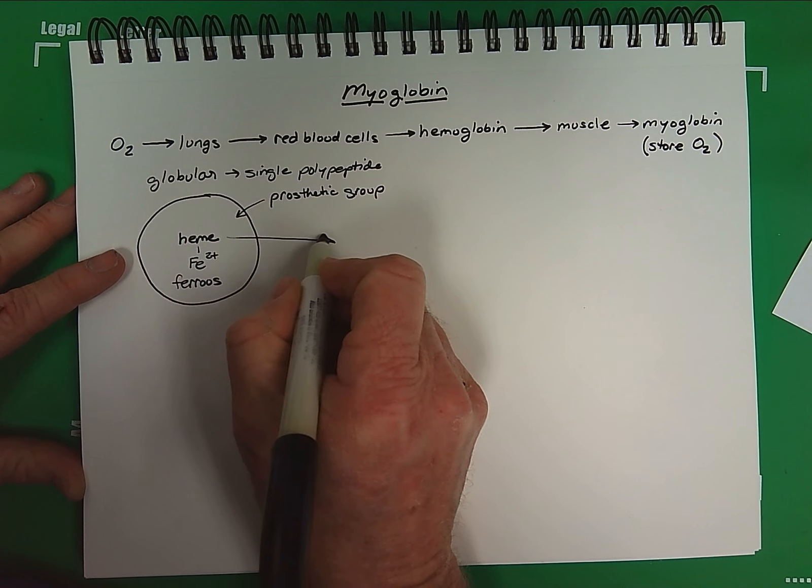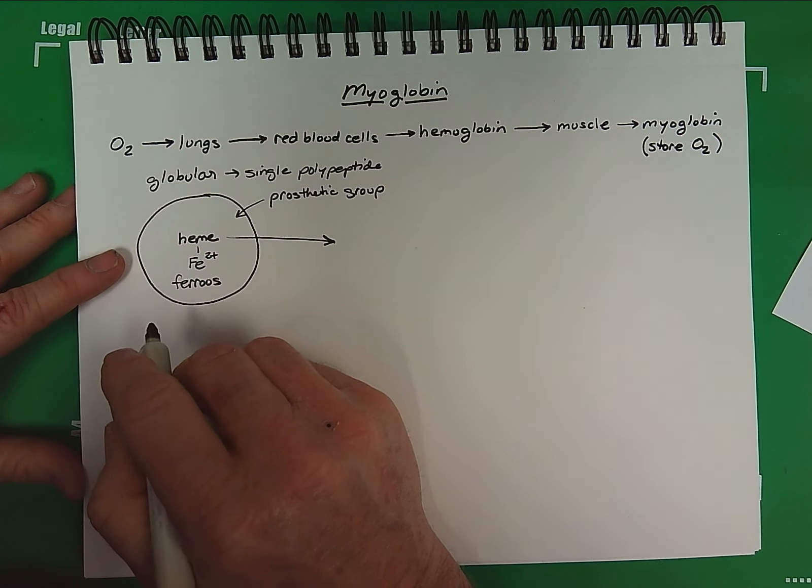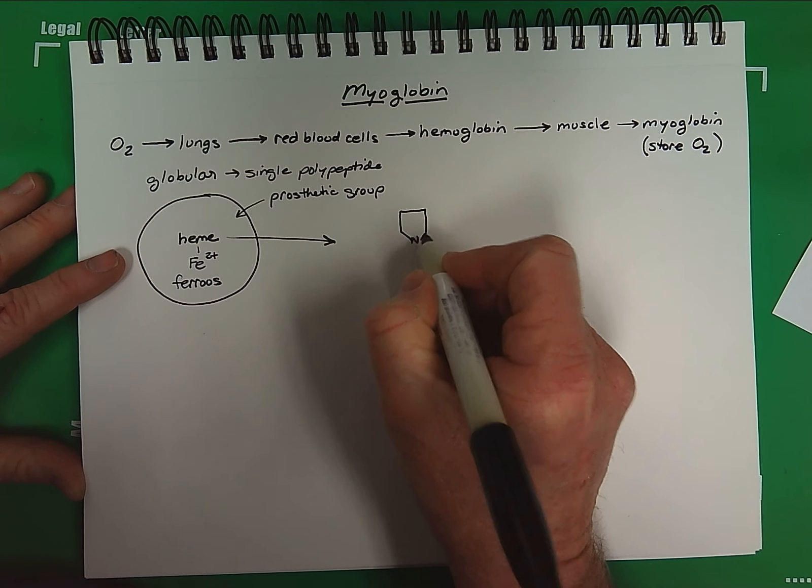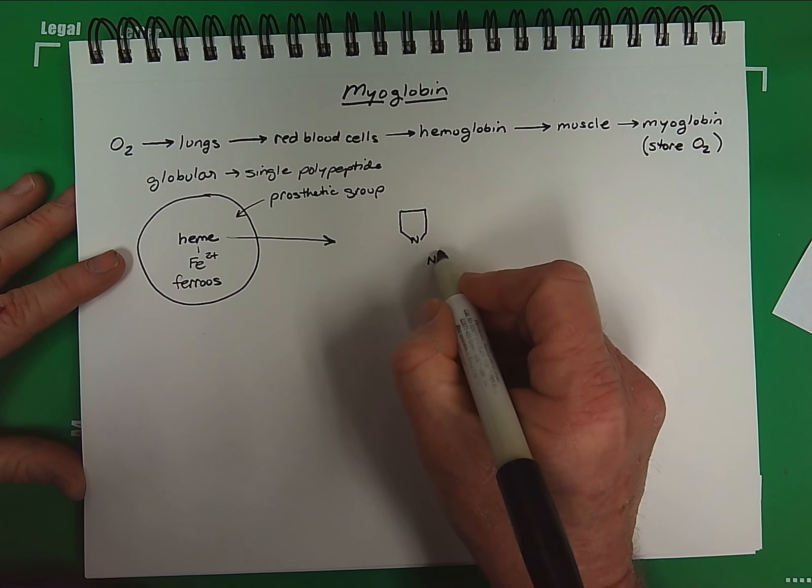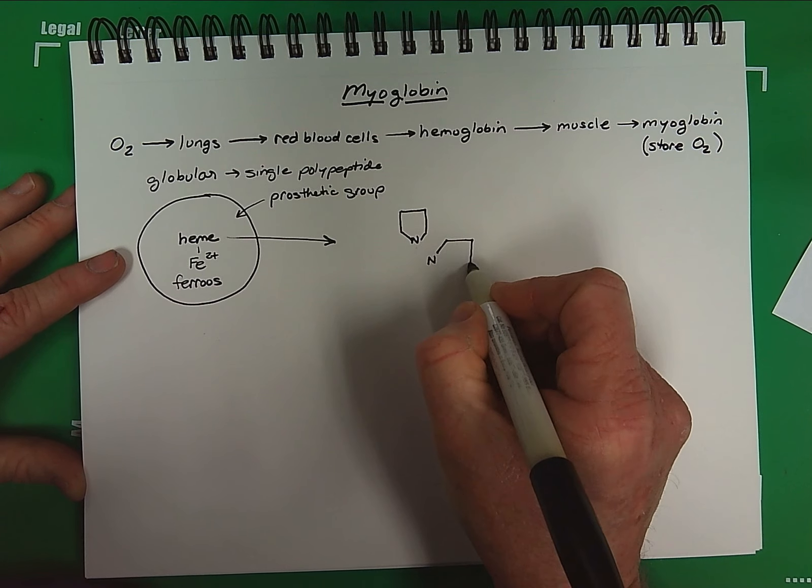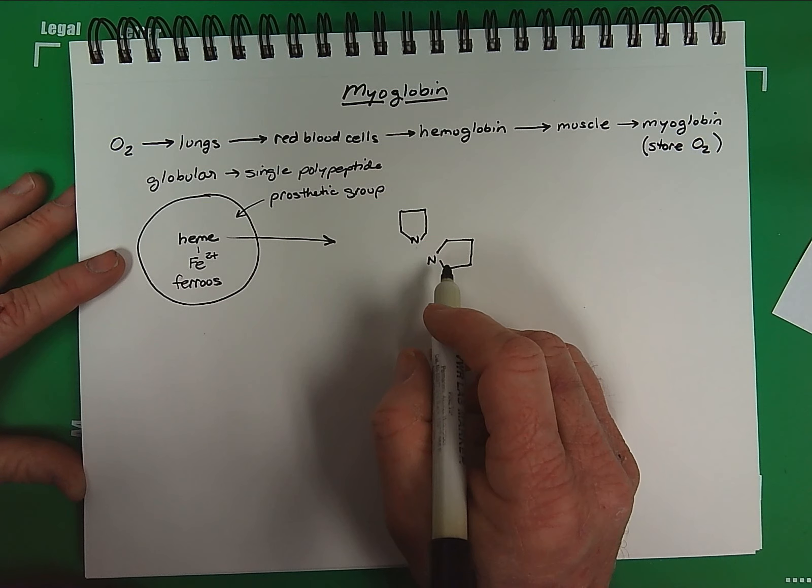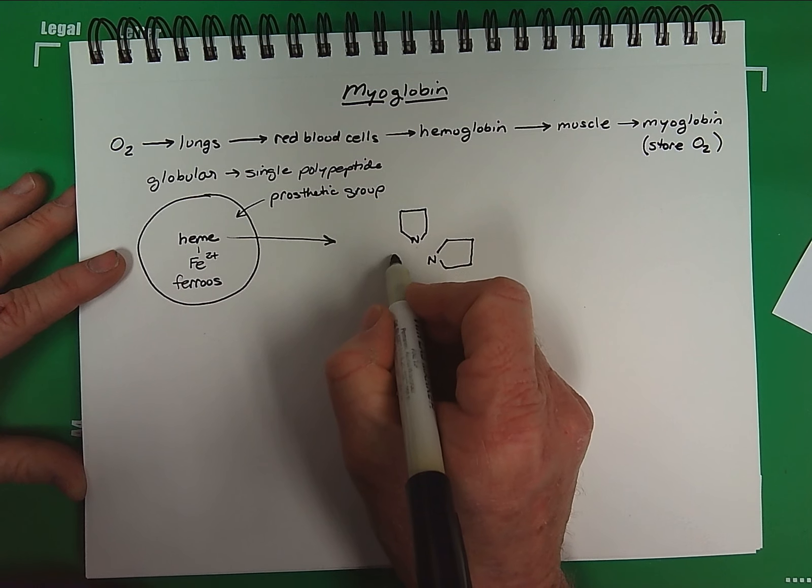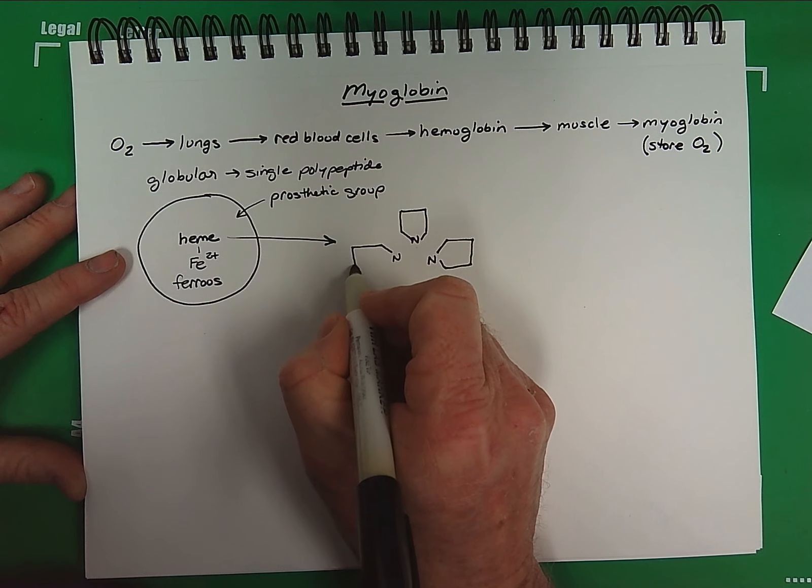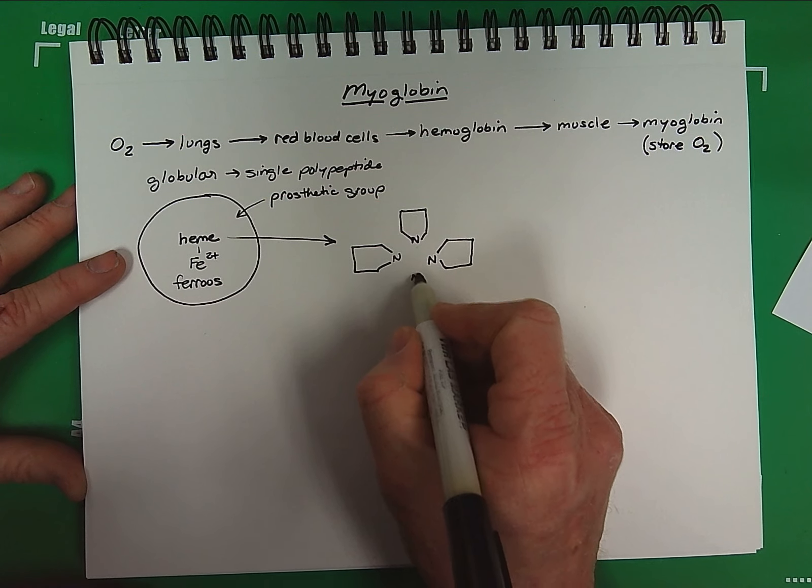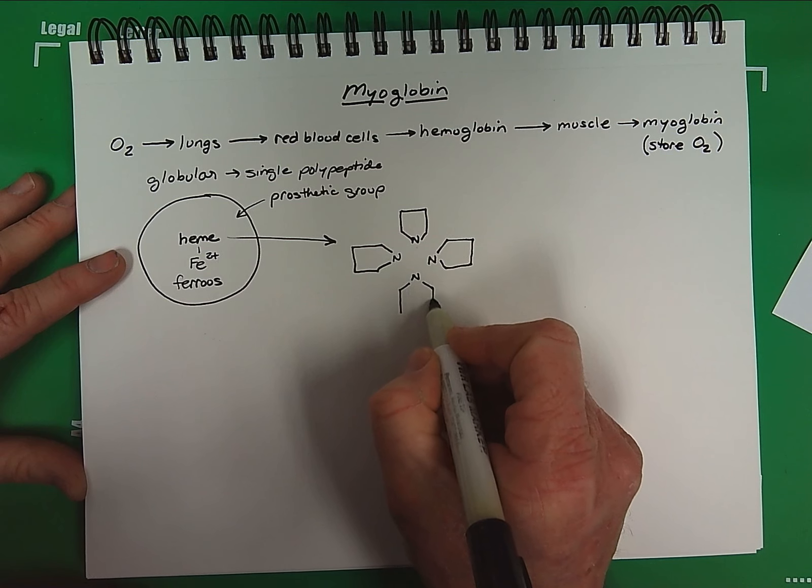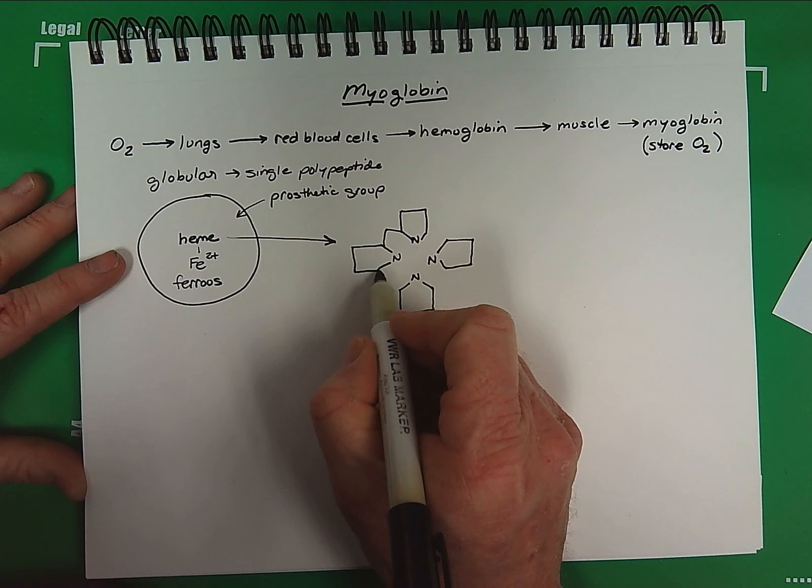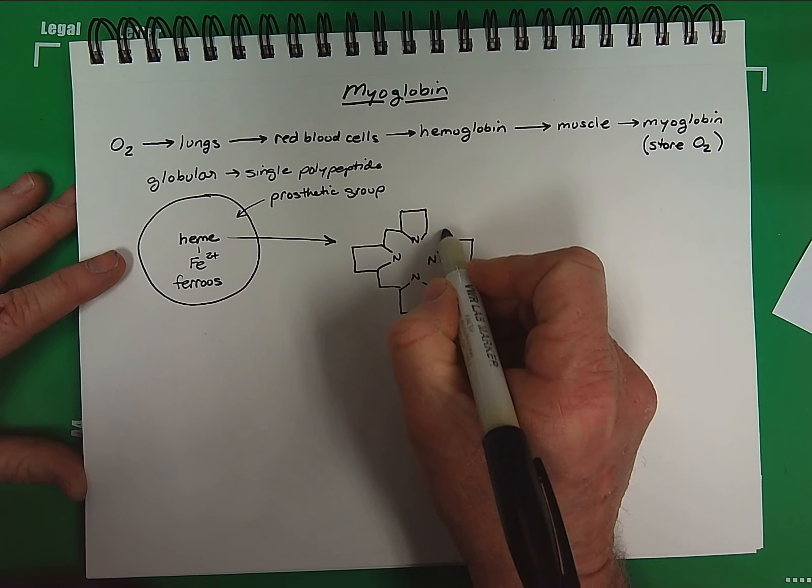Now let's take a look at the heme molecule itself. The heme molecule consists of four pyrrole rings. The pyrrole ring, recall, is this structure, and it has nitrogens coordinating its center structure. So we'll draw four pyrrole rings here, and then we will link these pyrrole rings together.